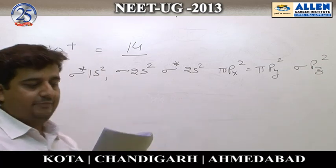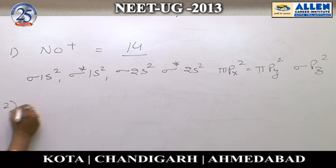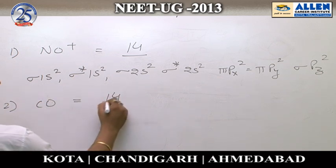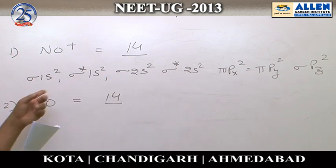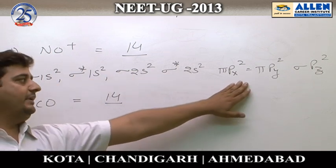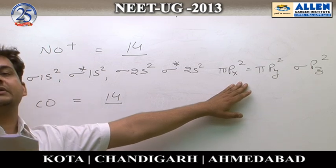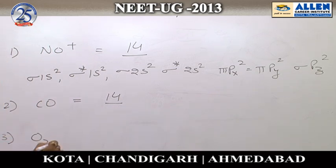For option 2, CO: the total number of electrons is again 14, so the molecular orbital configuration is the same as the previous one. There is no unpaired electron, so CO is also diamagnetic. Moving to option 3, O₂⁻.